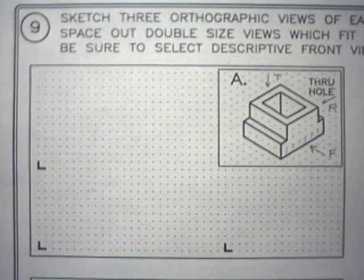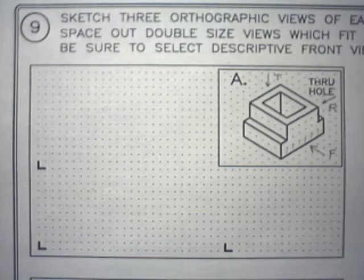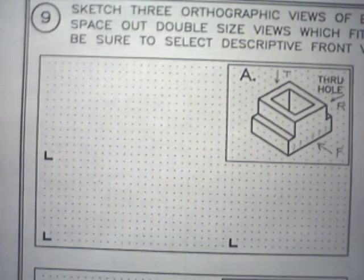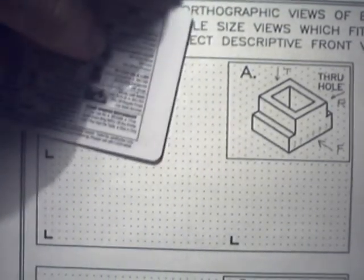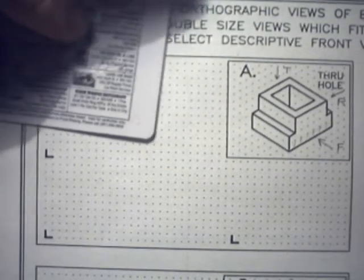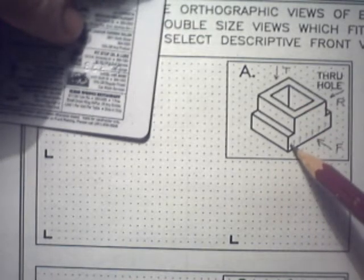You'll need some kind of straight edge to make these sketches. So what I recommend is just grabbing a student ID or a credit card or something like that that you can use to make these edges. So if you don't have a ruler, it's not a big deal. You can just use that. So back to this drawing here.